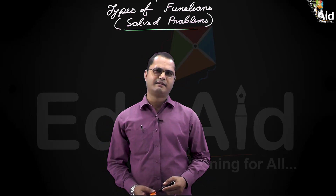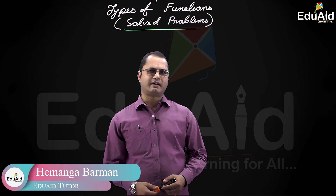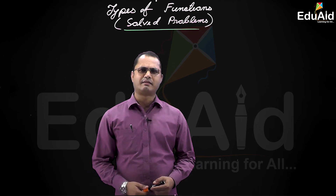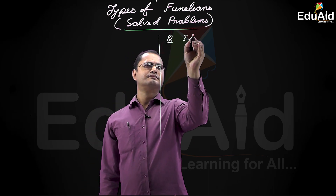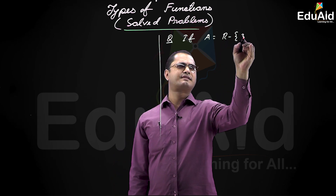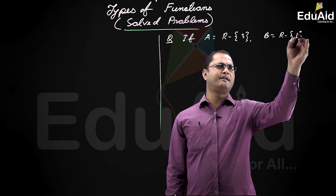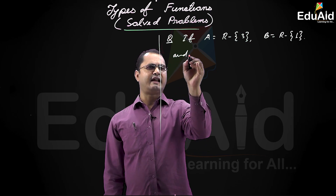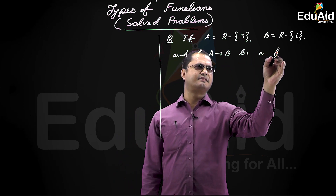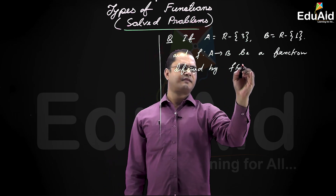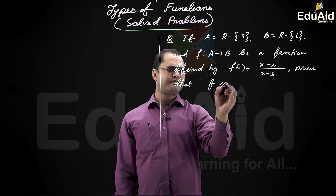Hello students, welcome to edu8. Here we will solve problems on types of functions. The first question: if A is equal to ℝ minus {3} (singleton set), B is equal to ℝ minus {1}, and f from A to B is a function defined by f(x) equal to (x minus 2) divided by (x minus 3), prove that f is a bijective function.